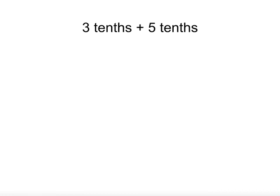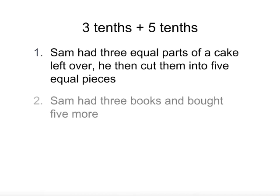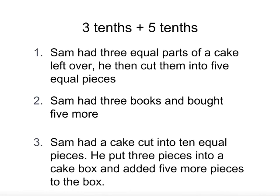Let's try another. Here we have three tenths plus five more tenths. Is it Sam had three equal parts of a cake left over, then cut them into five equal pieces? Or Sam had three books and bought five more? The first story says three equal parts of a cake — this doesn't tell us how many parts make the whole, so we don't really know what fraction this means. If you cut those pieces into five equal parts, they are fifths, but this doesn't really match our story.